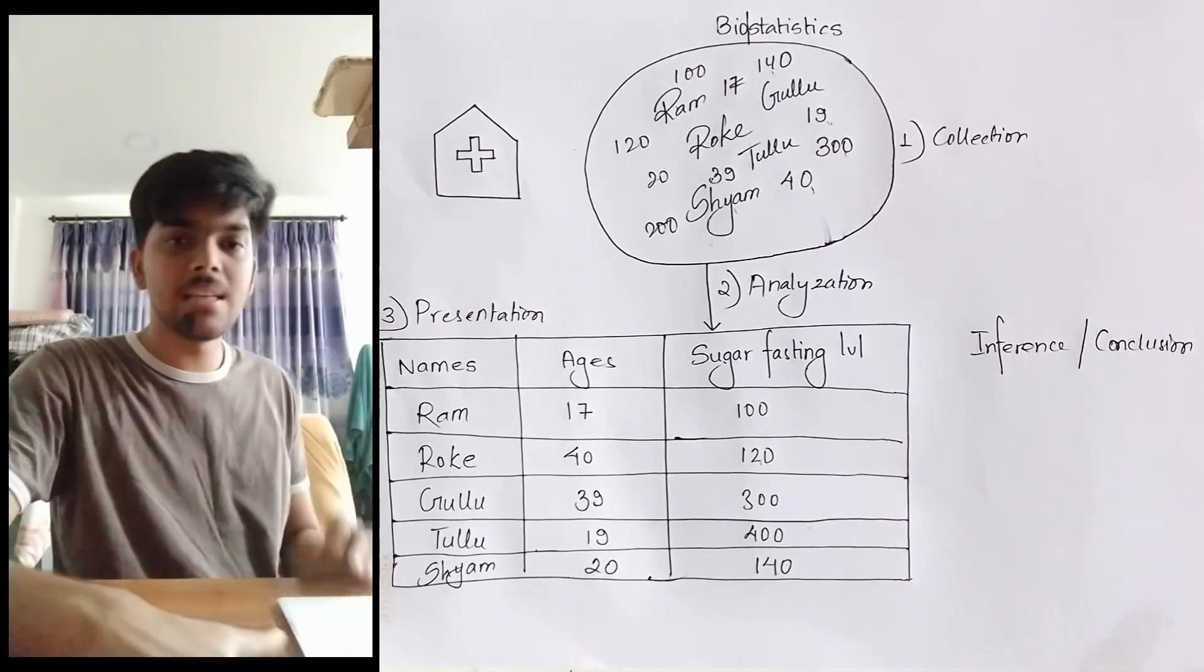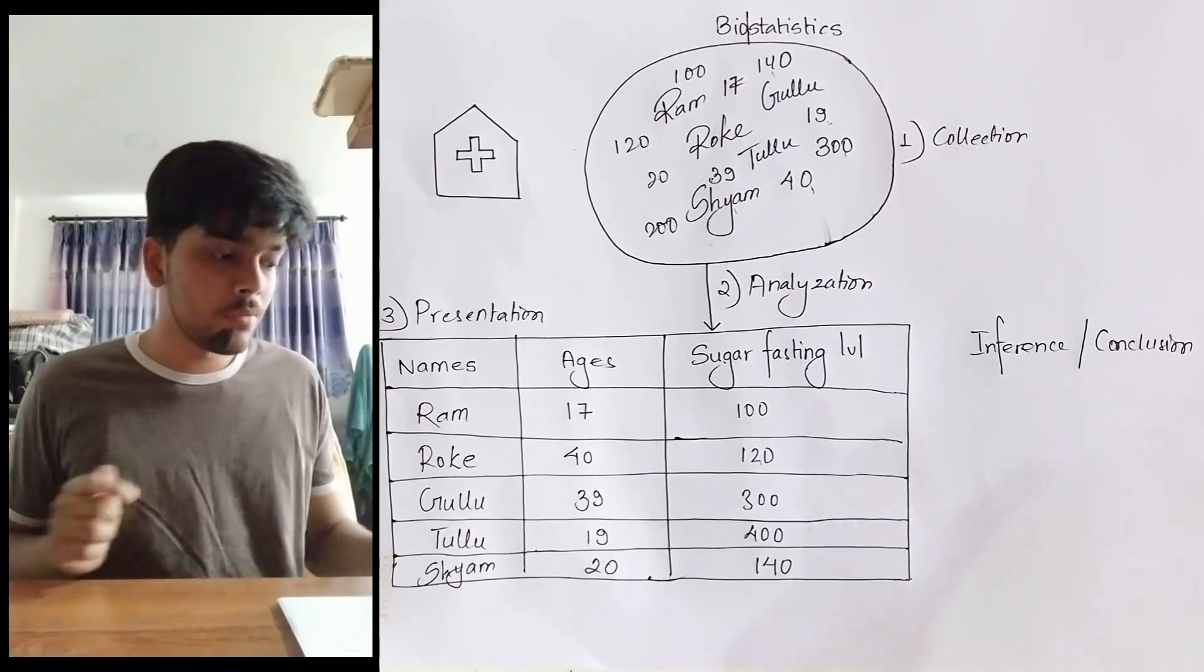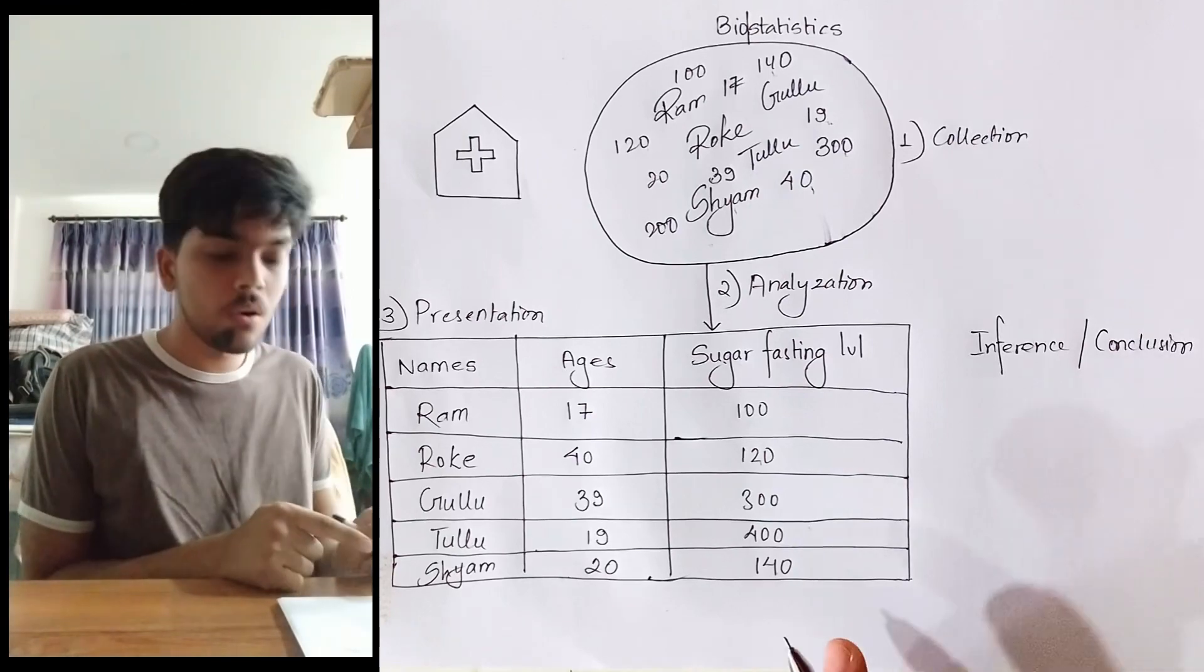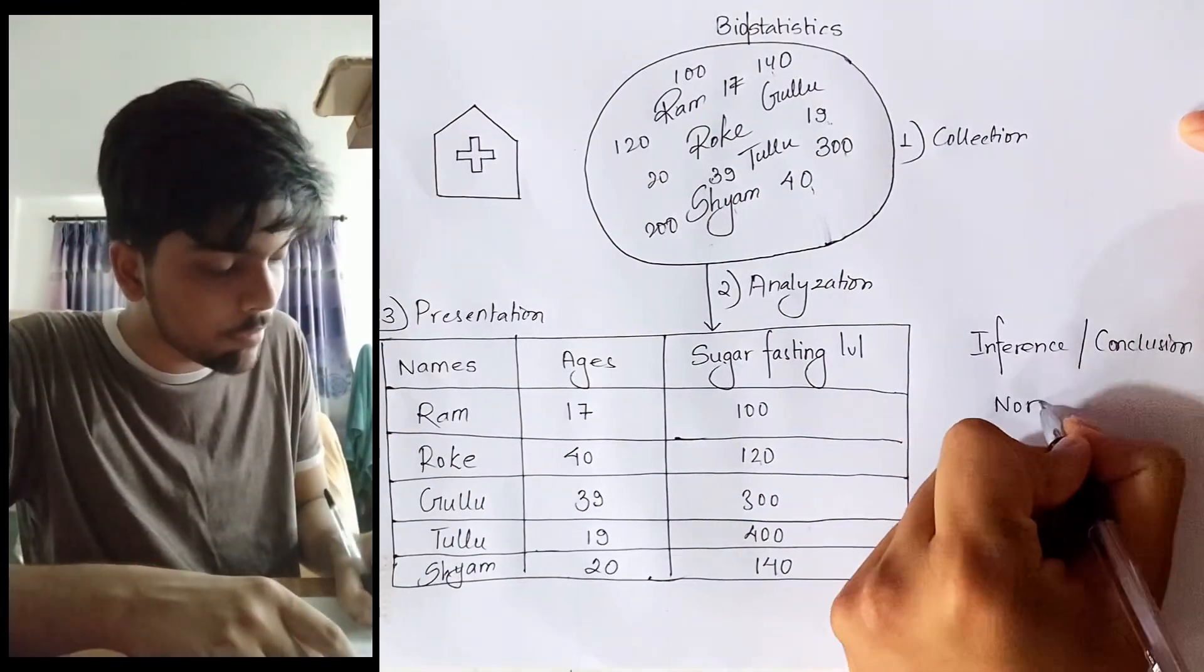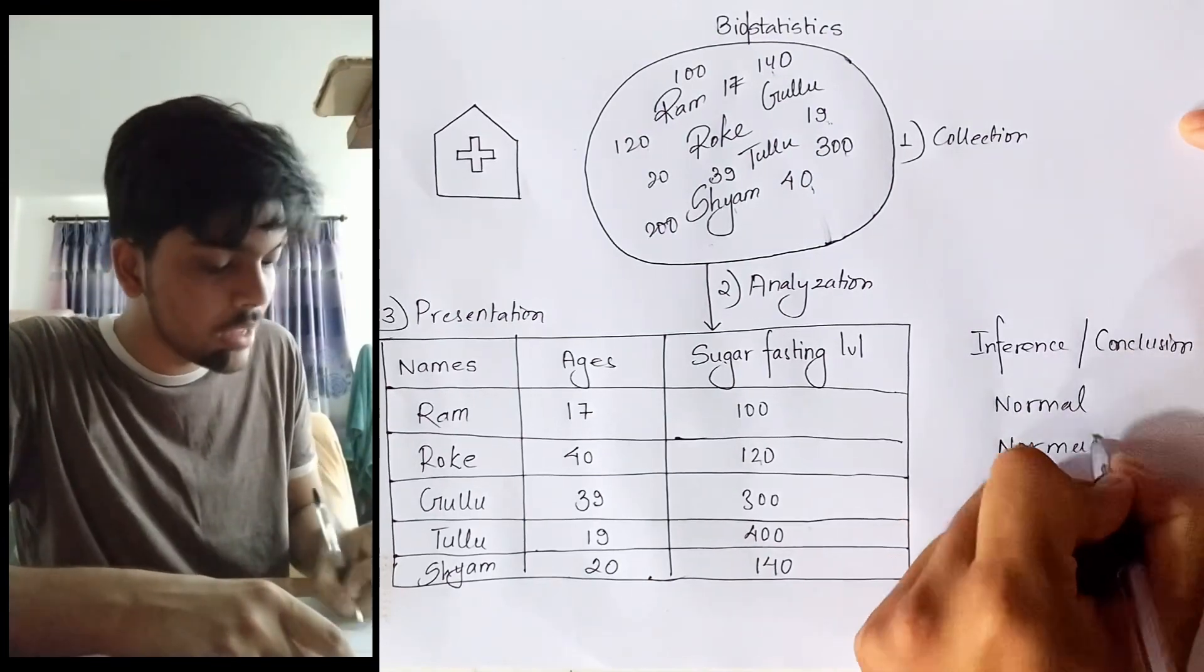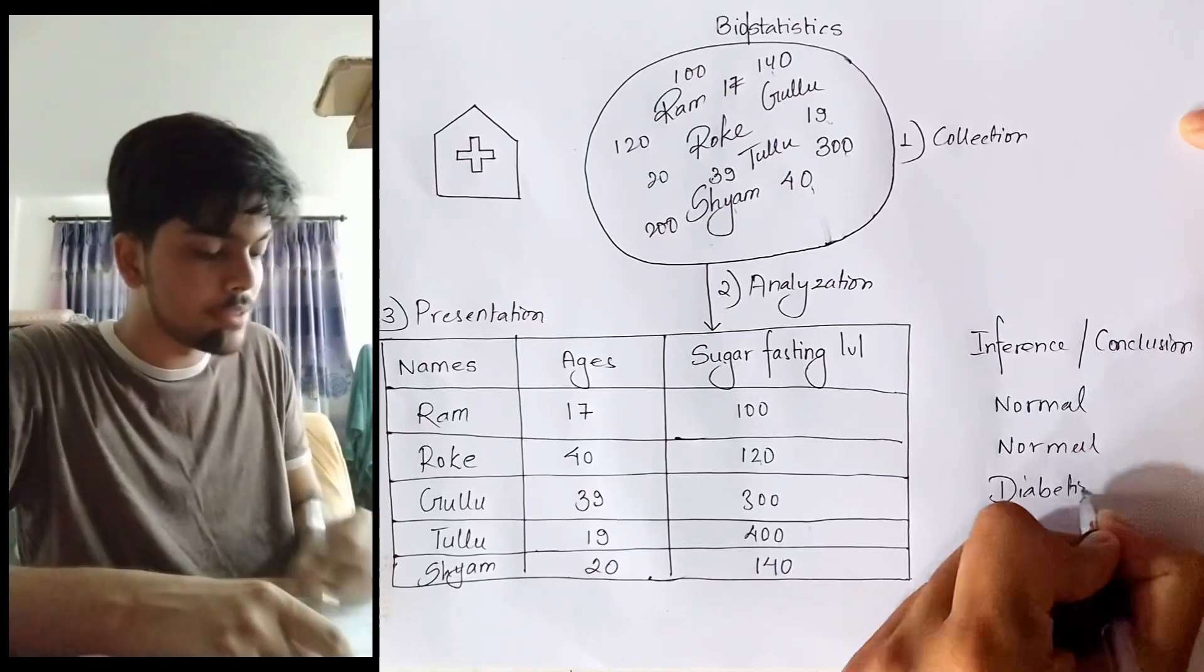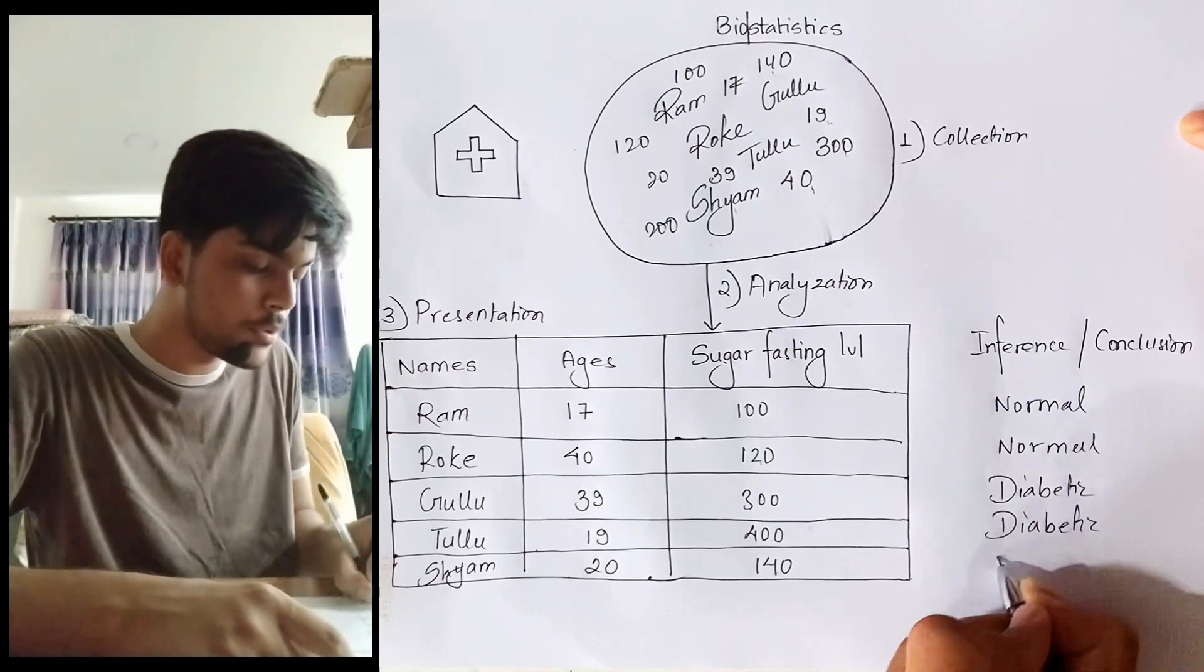Since they make sense, we can finally use that information to conclude something. From this information, what can we conclude? We can infer that Ram has normal sugar level fasting, Roke has normal sugar level fasting. However, Gullu is diabetic, and so is Tullu, and Sam has normal sugar level fasting.